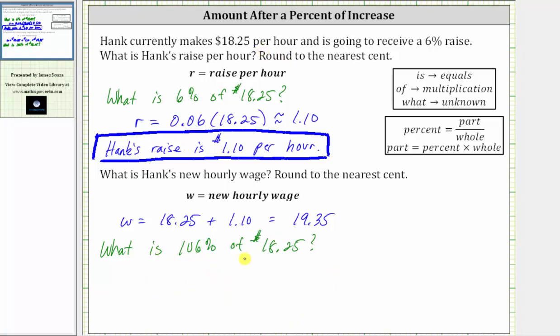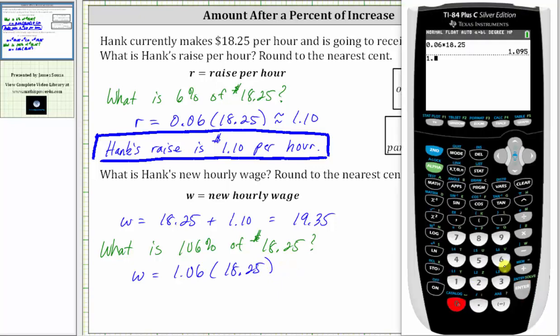And again, to find the percent of a number, we convert the percent to a decimal and multiply, which gives us W, the new hourly wage, is equal to 106% as a decimal is equal to 1.06 times 18.25. Going back to the calculator, 1.06 times 18.25, rounded to the nearest cent, gives us $19.35.